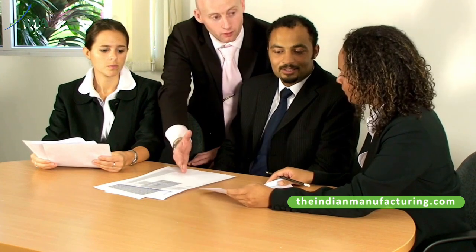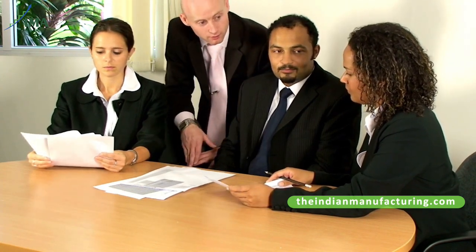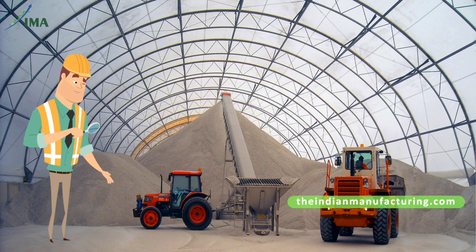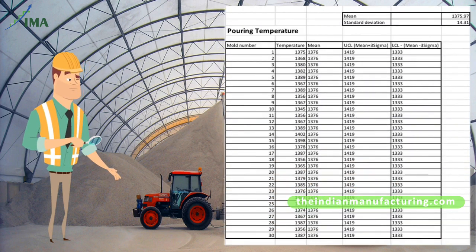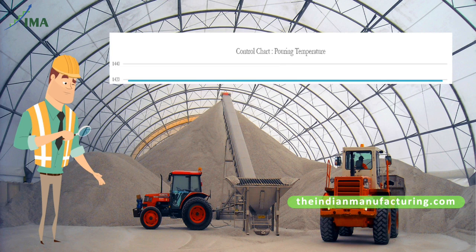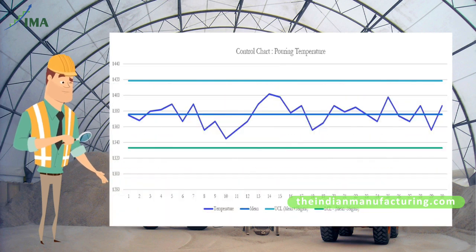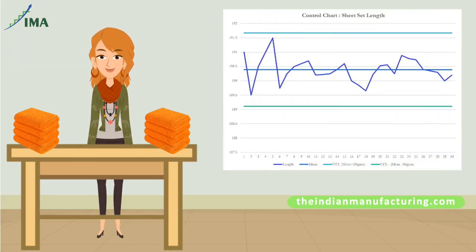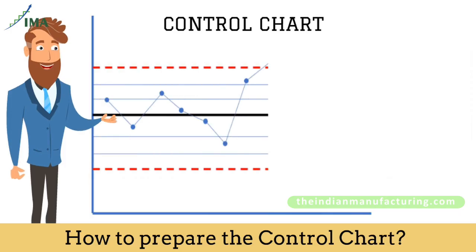When a team is solving a problem, they may want to collect data and understand the status of the process. For example, the sand temperature may be collected at higher frequency to understand the process, plotted as a control chart to see how far it is within the control limits. Similarly, the sheet set length may be plotted as a control chart to understand the variation happening in the cutting process.